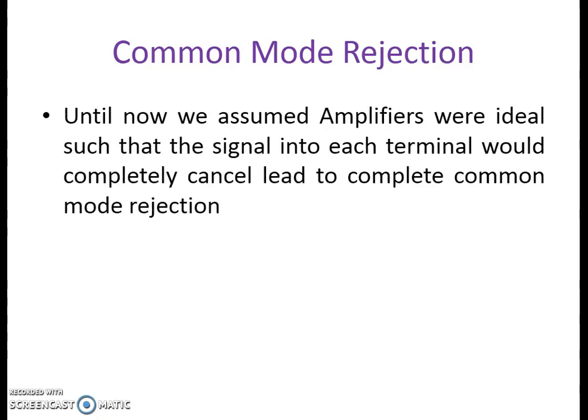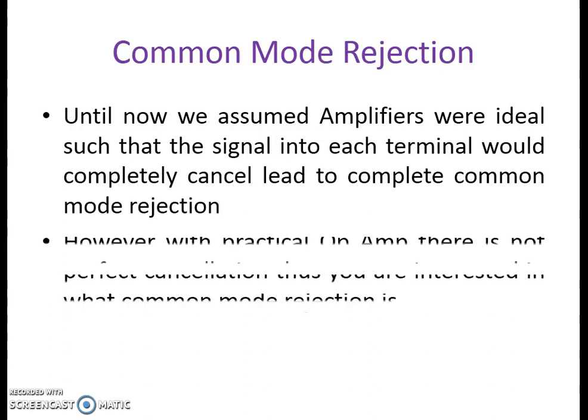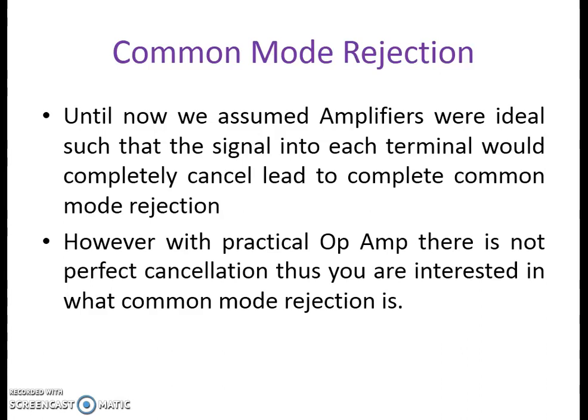Whenever we are designing the preamplifier of the ECG machine, we always have to look for certain noise signals. One of the major sources of noise is the common mode signal. Until now, we have assumed amplifiers were ideal such that the signal into each terminal would completely cancel each other, leading to complete rejection of the common mode signal. But practical op-amps are not ideal — they are incapable of completely canceling the common mode signal which appears at the input terminals.